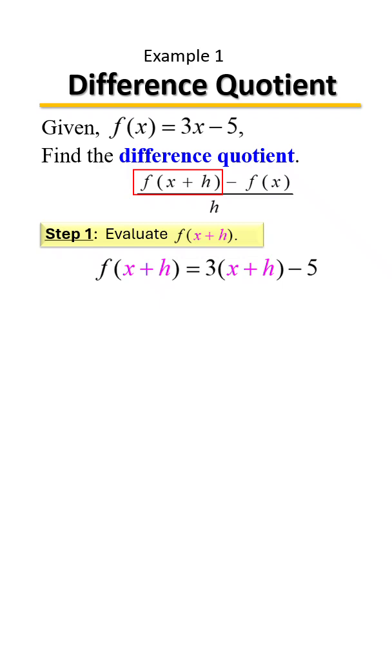We're going to use the distributive property to simplify: 3 times x is 3x, 3 times h is 3h.